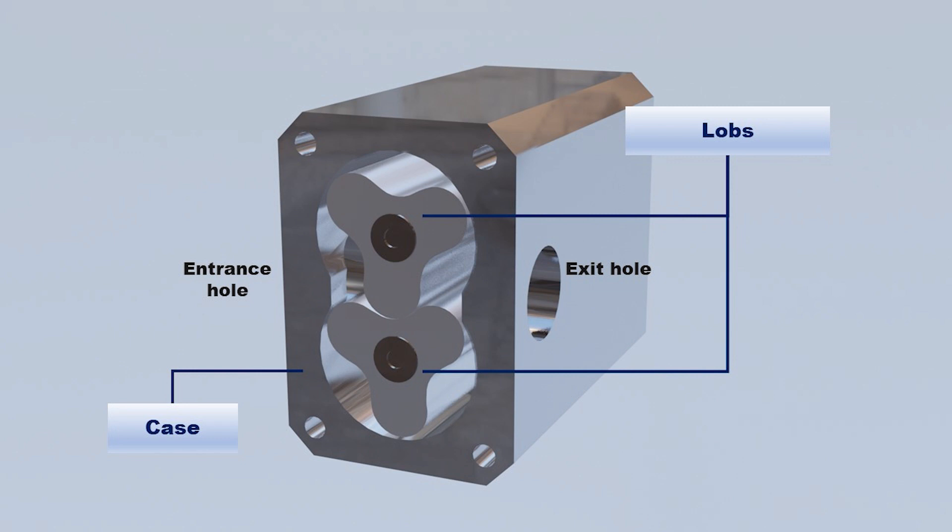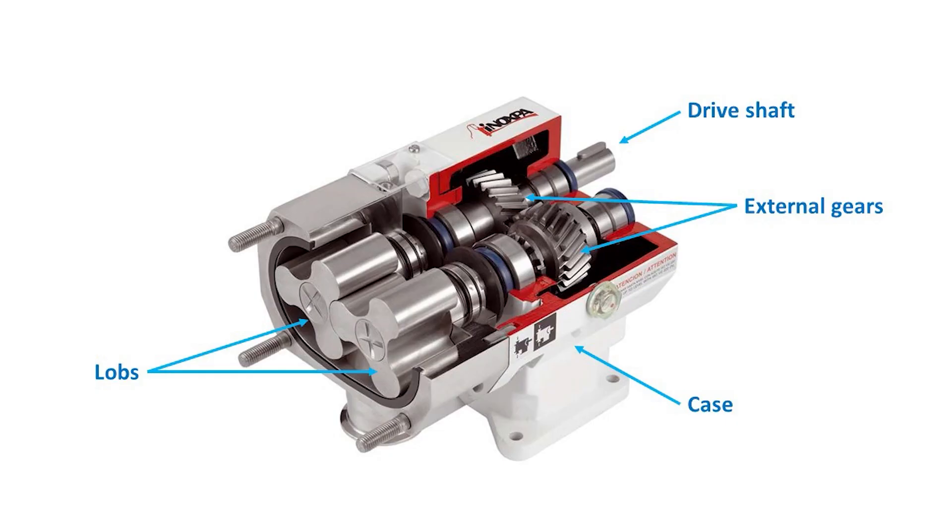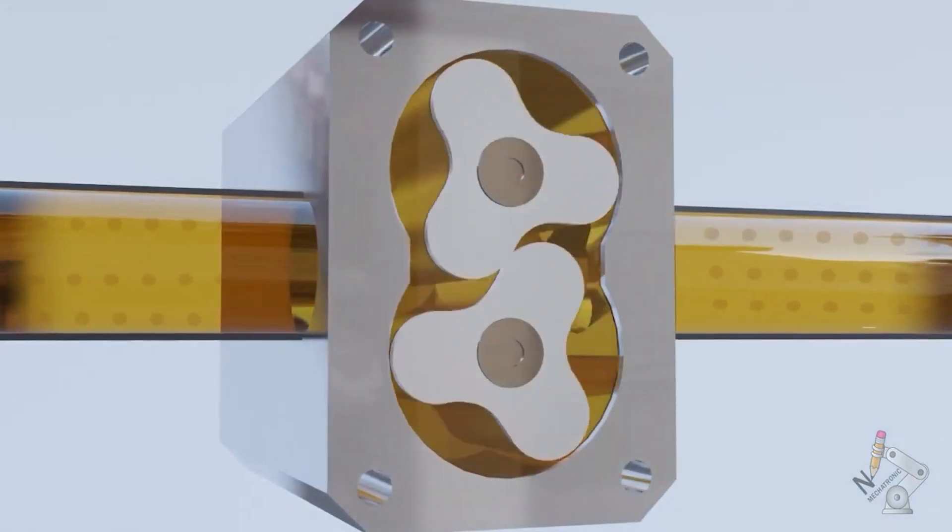Lobe pump. This pump consists of three lobes on each shaft, which are surrounded by the external structure that is the casing. Its drive is independent by means of a gear system external to the pumping chamber. There are also two lobe pumps on each shaft.